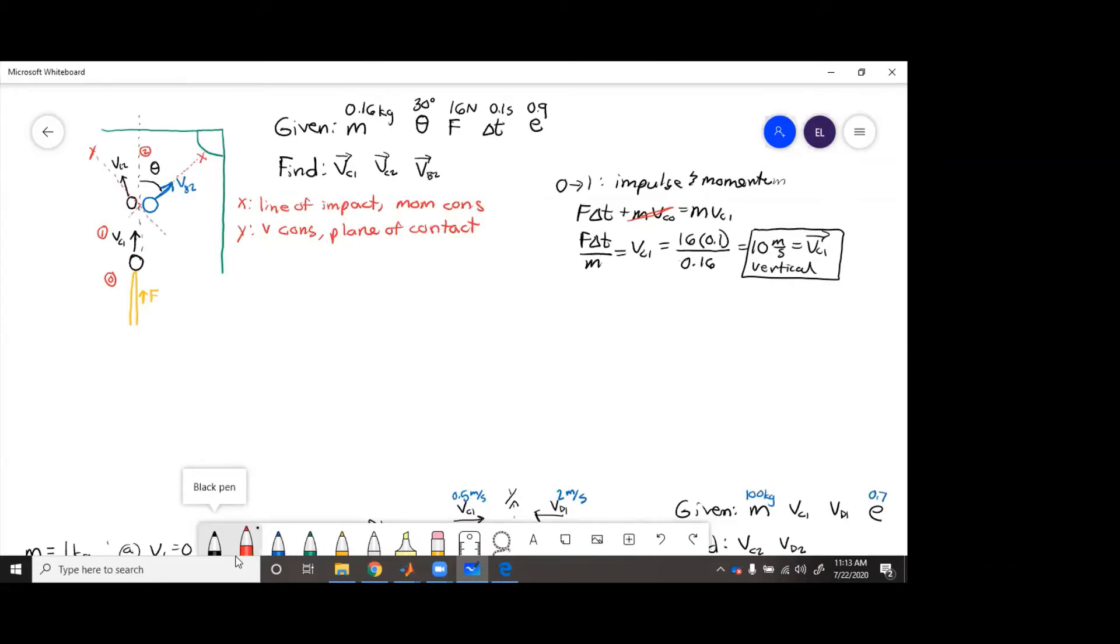And this big angle is 180. So if we name this, let's say this is gamma. We need to find that angle. We know that gamma equals 90 degrees minus theta.